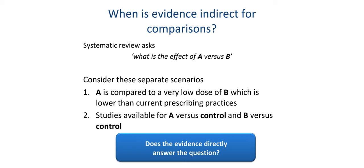When is evidence indirect for comparisons? A systematic review may ask what is the effect of intervention A compared with intervention B. The available studies may compare intervention A at an inappropriate or very low dose of intervention B, and therefore a review author may downgrade the quality of evidence for indirectness. Alternatively, all available studies may address only intervention A versus control and intervention B versus control. Review authors must make judgments about whether this evidence is direct enough to answer the question at hand.